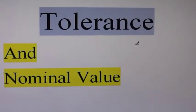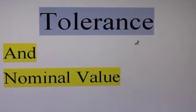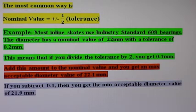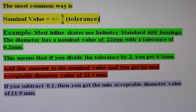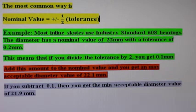Let's look at how nominal value relates to tolerance. The most common way is nominal value equals plus or minus one-half the tolerance. Let's look at an example.